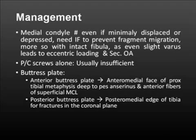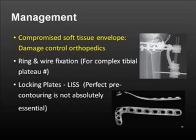Buttress plates are very effective. An anterior buttress plate can be placed on the anteromedial surface. However, if there is a coronal plane fracture, one may need to go posteriorly and place a buttress plate posteromedially. For cases with compromised soft tissues, locking plates are a far better option if planning percutaneous fixation of these fractures.